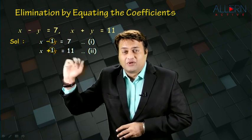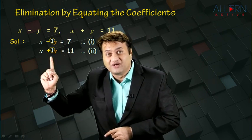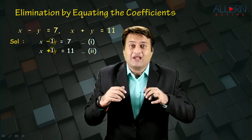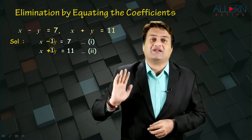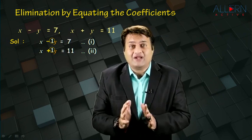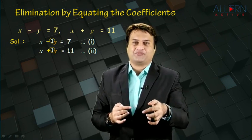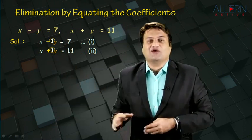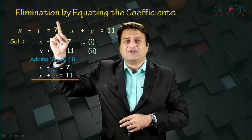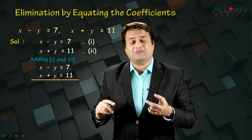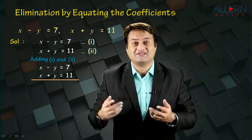Now look at the variable y and the signs of y. The sign in the first equation is minus and in the second equation is plus — the signs are different, and whenever the signs are different, we need to add. To summarize: to eliminate a variable, either add or subtract the two equations. Check the signs of the variable to be eliminated — if the signs are the same, subtract; if the signs are different, add. Here, to eliminate y, the signs are different, so we add the two equations.